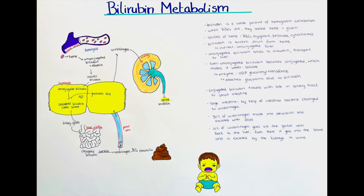The heme part is where the bilirubin comes from. Some other sources of heme can also be from myoglobin, peroxidases, and cytochromes. But by far the most heme is released from hemoglobin from dead red blood cells.